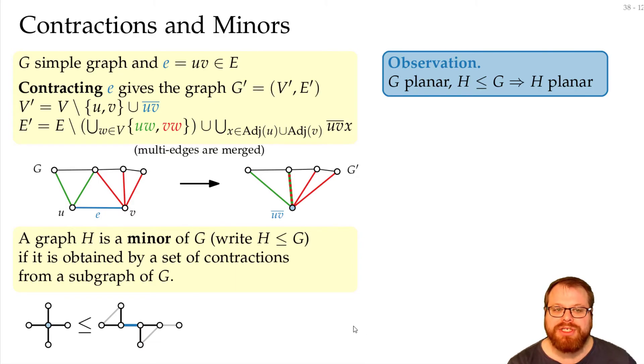Now, our first observation is that if we have a planar graph, and we have a minor of it, then it stays planar.